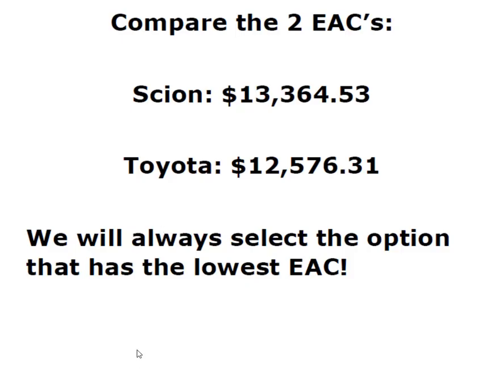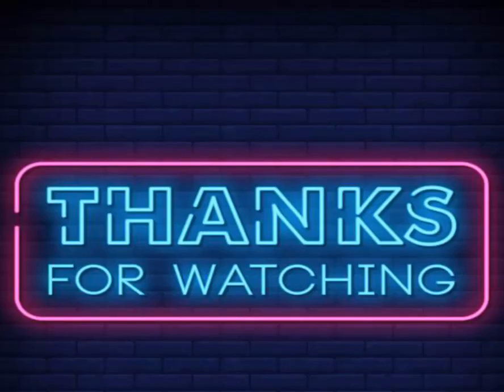Now I have an EAC for both vehicles. The Scion is $13,364 and change; the Toyota is $12,576 and change. We will always select the option with the lowest EAC, so in this case we will purchase the Toyota with the lower equivalent annual cost. I hope this helped — thanks for watching.